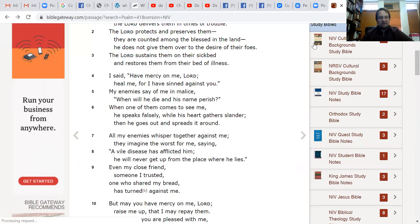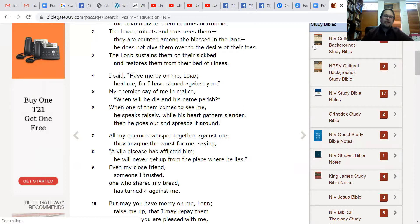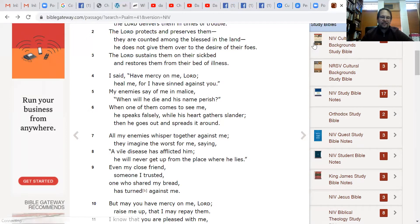My enemies say of me in malice, when will he die and his name perish? When will the church close and we can put up a McDonald's there? When will that building be sold for housing? When will they go away and not continue meeting? That's what our enemies are saying. When one of them comes to see me, he speaks falsely while his heart gathers slander. When he goes out and spreads it around, all my enemies whisper together against me. They imagine the worst for me, saying a vile disease has afflicted him. He will never get up from the place where he lives.